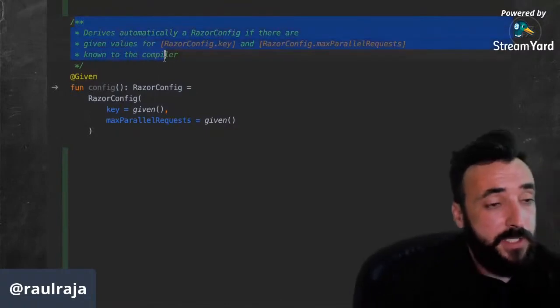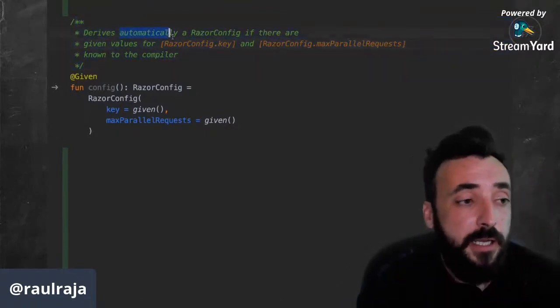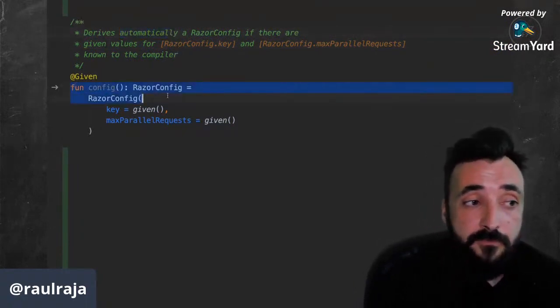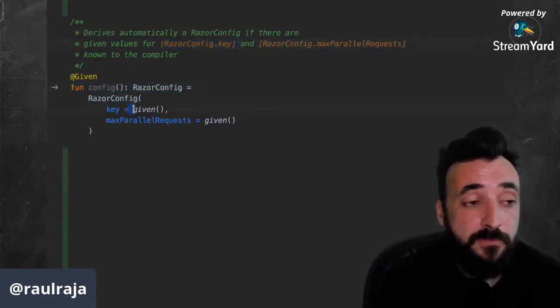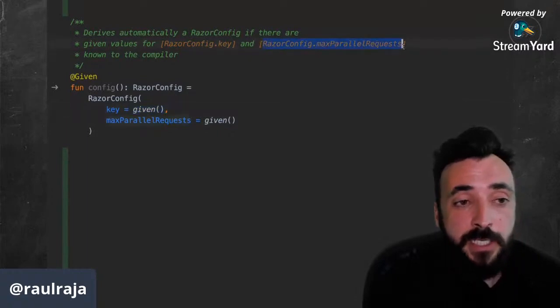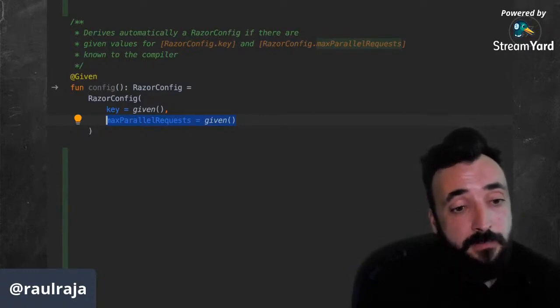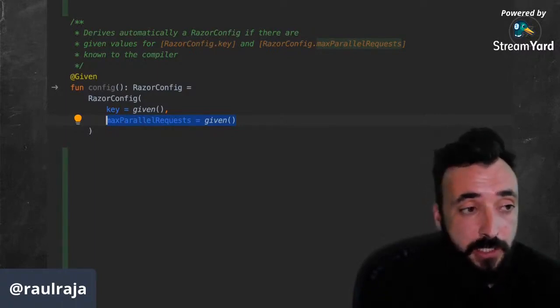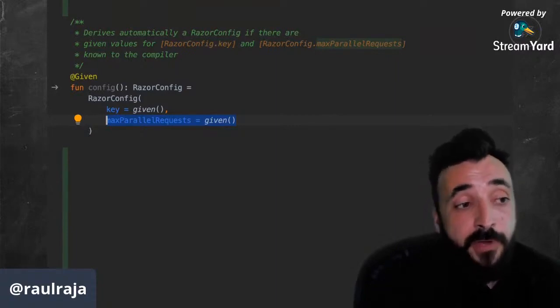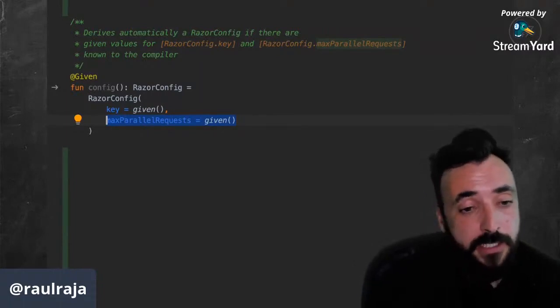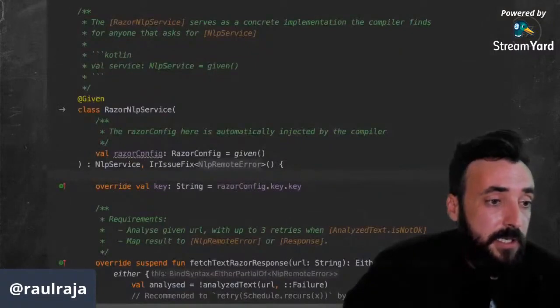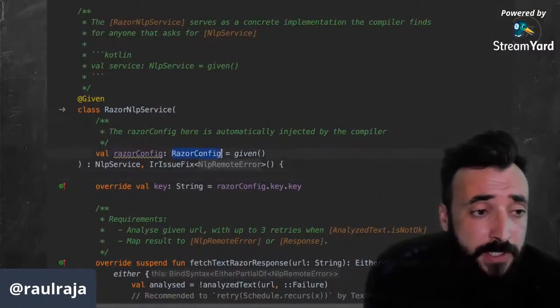And here's a couple of examples of that. We have an object, the Razer config. And this object has the given annotation. The given annotation is basically flagging this function as a provider for the type Razer config. And it's going to give us a value that we want in our application based on two other values. And as you've noticed here, those two other values are also flagged as given with the given function. As I mentioned earlier, in any position expression, whether it's value arguments or inside method bodies, you can summon these types coherently.